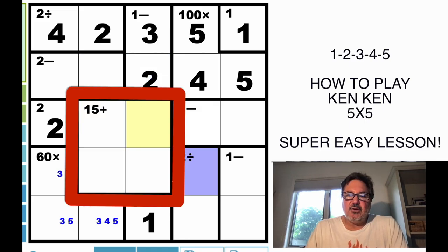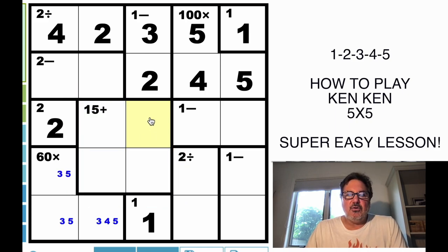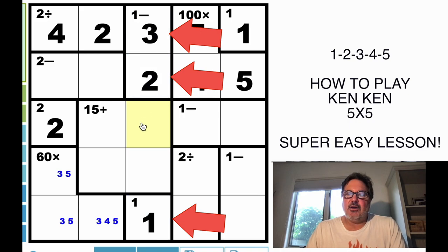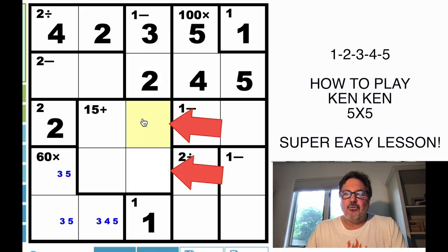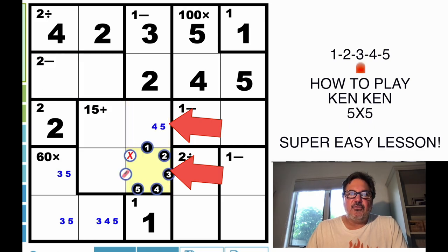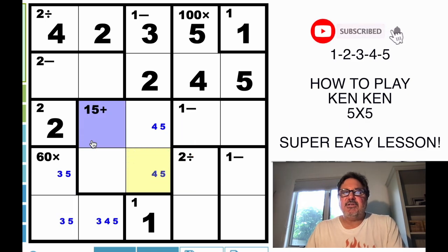So that brings us to this one here, this block in the middle. Something plus something plus something plus something is going to equal 15. And we know, because there's a 1, 2, and 3 here, that there can only be a 4 and 5 in this square or this square. So let's go ahead and put those pencil marks in. 4 and 5 in that square, and a 4 and 5 in that square.